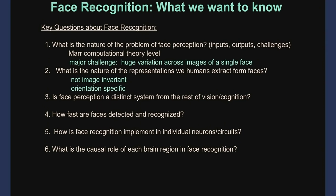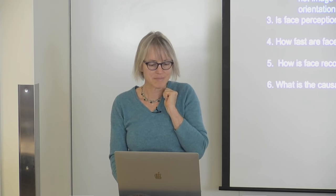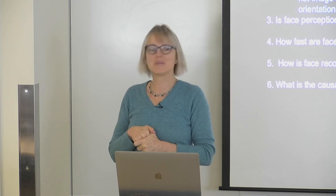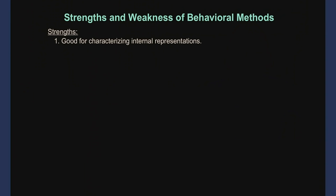Our mental representations of faces are very sensitive to the orientation of the face, more than our mental representations of other classes of stimuli. Those are simple insights about whatever our representations of faces are in our heads, just from simple behavioral data. The strengths of behavioral methods: good for characterizing the internal representation — not with huge computational precision, more like gisty kind of ideas. They're good for dissociating mental phenomena. The inversion effect happens more for faces than other things, which starts to tell us that the code we use for face recognition may be pretty different from the code we use to recognize objects. Also, it's cheap.